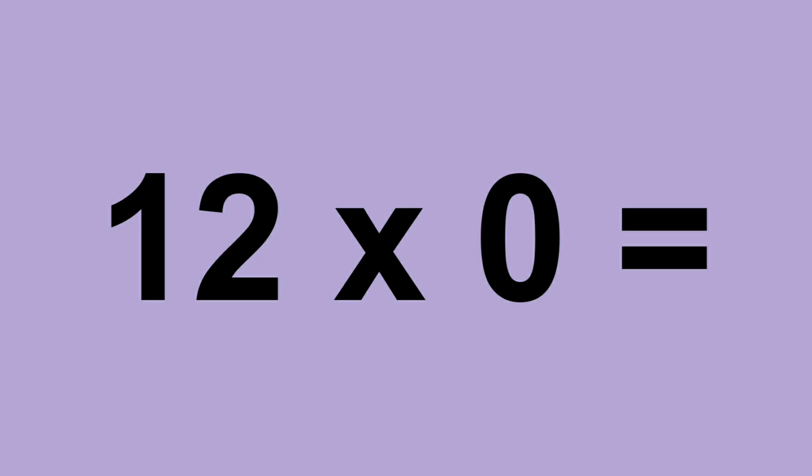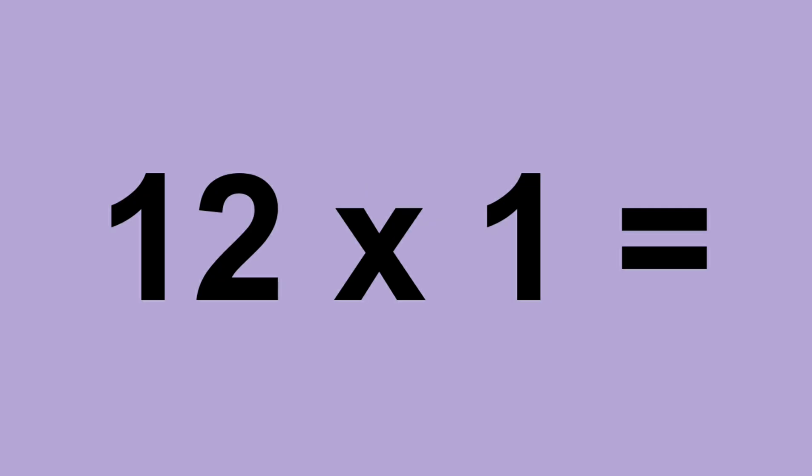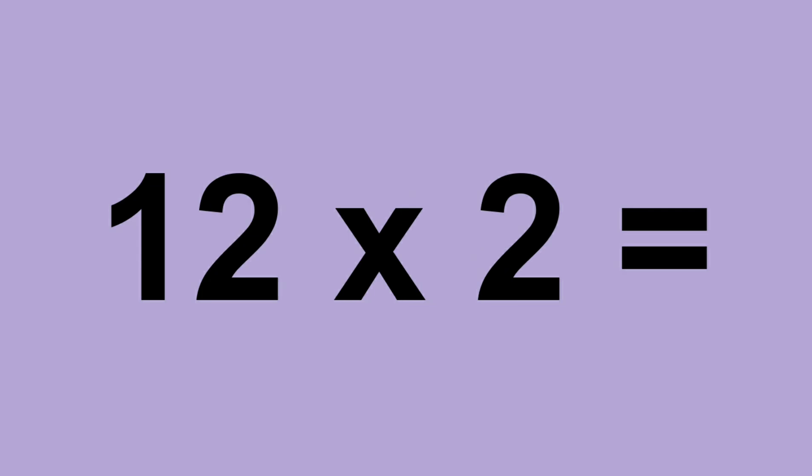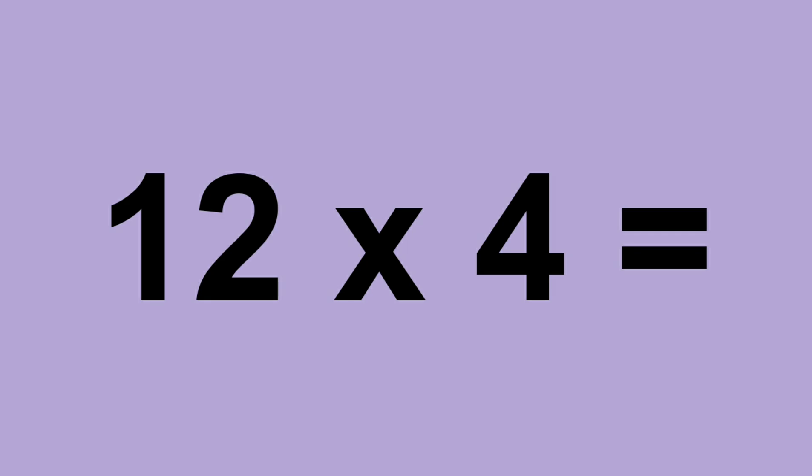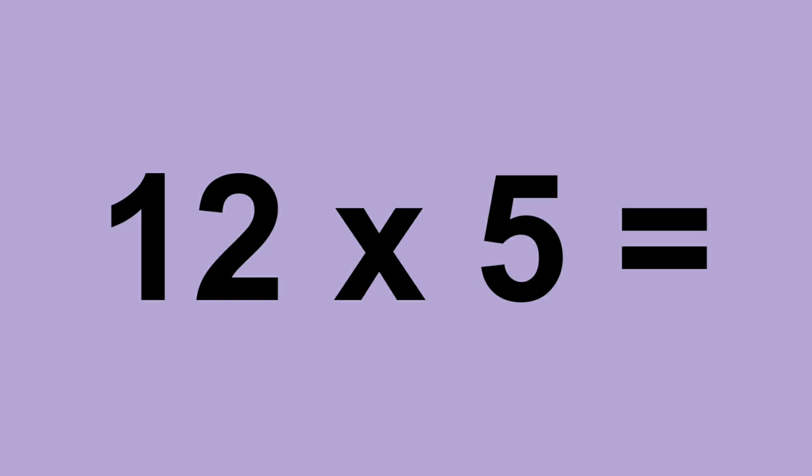Twelve times zero equals zero. Twelve times one equals twelve. Twelve times two equals twenty-four. Twelve times three equals thirty-six. Twelve times four equals forty-eight. Twelve times five equals sixty.